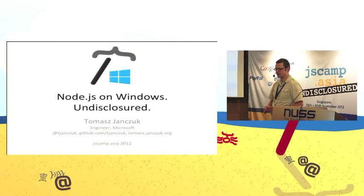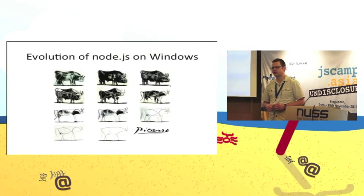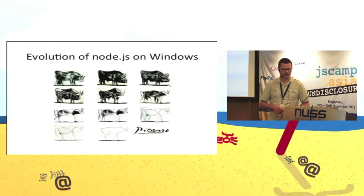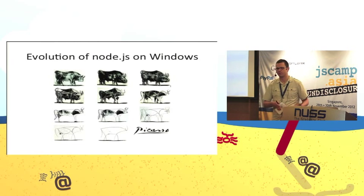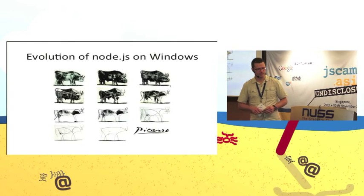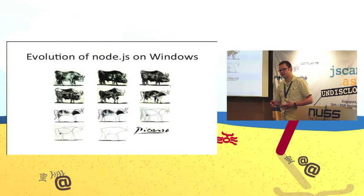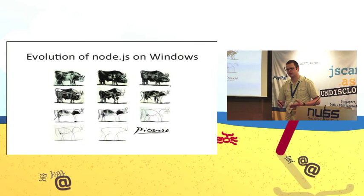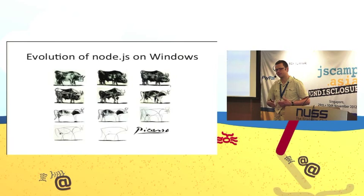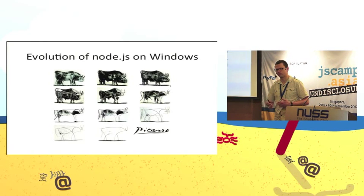The Node.js project is an open source project that started back in 2009 with the goal of creating a cross-platform runtime for writing web services in JavaScript. The basic idea was to leverage the skills that front-end developers have with JavaScript in the web browser, and enable them to write scalable web servers as well. The basic paradigm of Node.js is that the server application is single-threaded and asynchronous, giving a very similar programming experience to the browser.